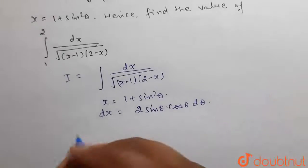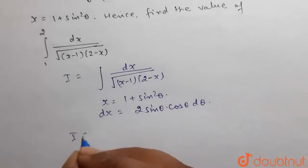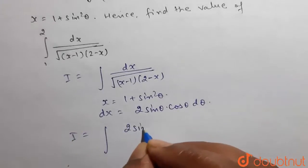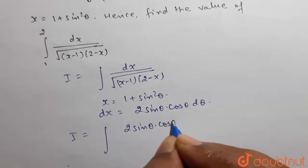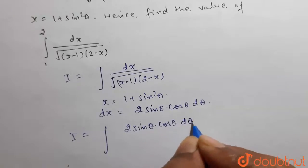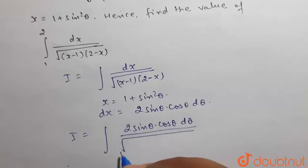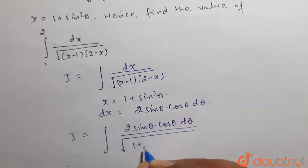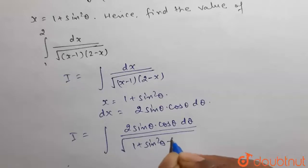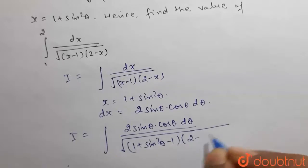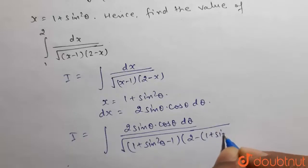So, I will be equal to integration of dx, which is 2 sin theta into cos theta d theta, divided by under root of — x is 1 plus sin square theta — so it will be (1 plus sin square theta minus 1) into (2 minus 1 plus sin square theta).